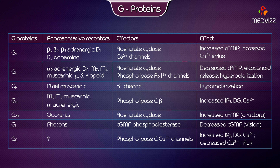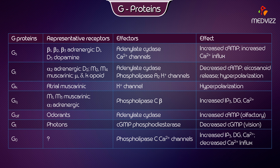G-Protein Gi: representative receptors include alpha-2 adrenergic, D2, M2, M4 muscarinic, and mu, delta, and kappa opioid receptors. Effectors are adenylate cyclase, phospholipase A2, and potassium channels. The effect is decreased cyclic AMP, eicosanoid release, and hyperpolarization.